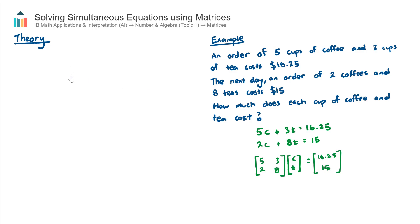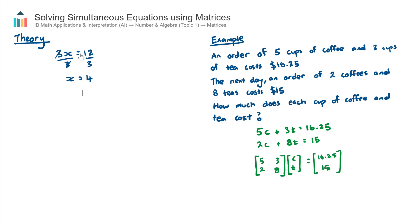Let's cover a little bit of theory so the example starts to make sense. Going back to simple algebra: if we have 3x equals 12, to find x we isolate it by dividing both sides by 3, giving x equals 12 divided by 3, which is 4. This is standard algebra, and now we want to do the same process but for matrices.